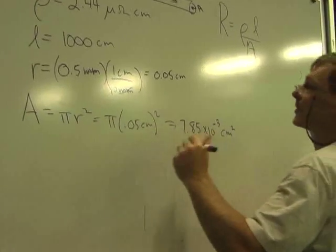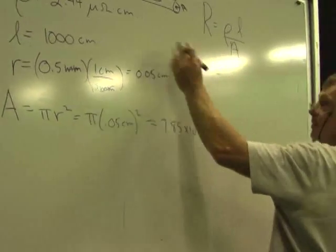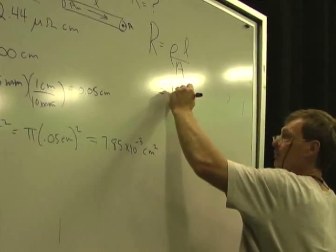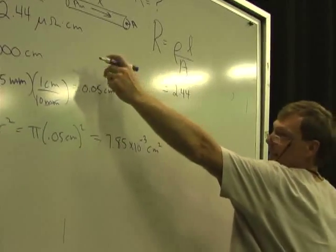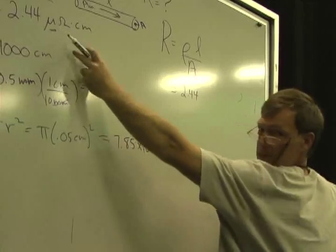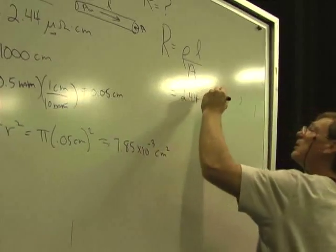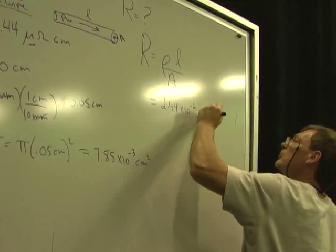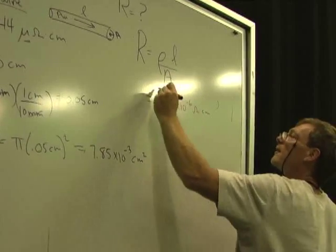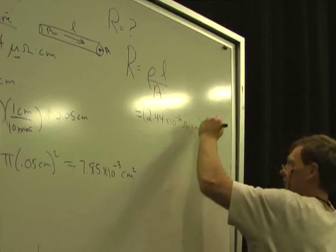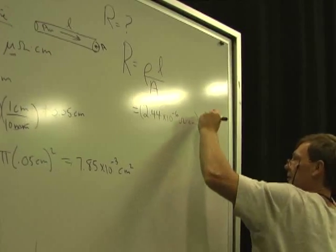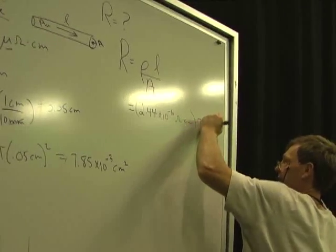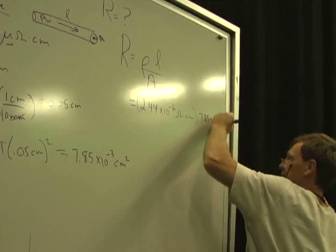So the resistivity, the resistance is resistivity, which is 2.44. Instead of micro-ohms, that means times 10 to the minus 6 because it's micro. So I'm going to say 2.44 times 10 to the minus 6 ohms times centimeters, there's my micro right there, times the area, which is 7.85 times 10 to the minus 3 centimeters squared.